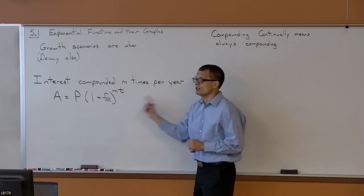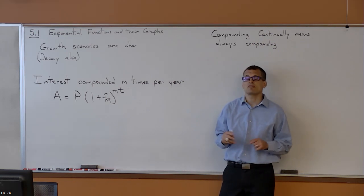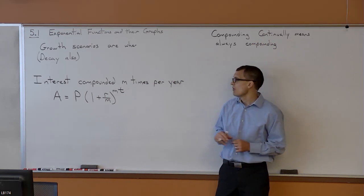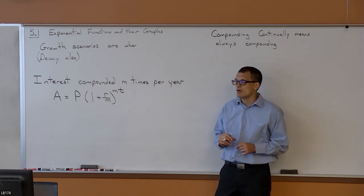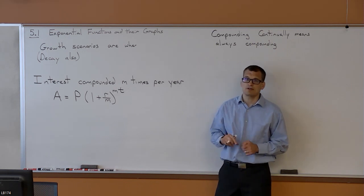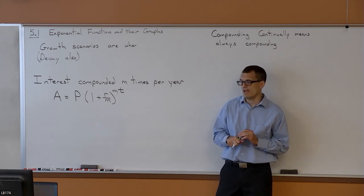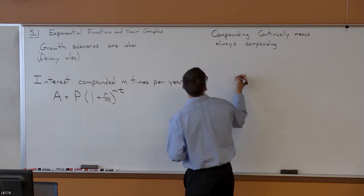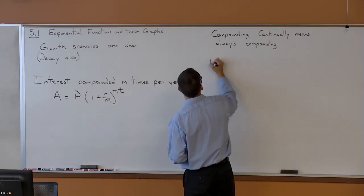So what would you do for compounding continually? Well, it turns out we need a new number if we're going to deal with that. We need what we call the number E.